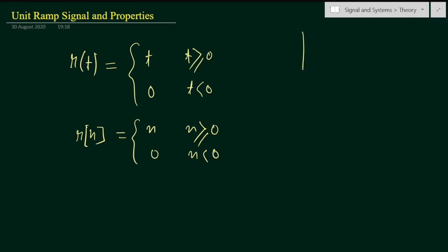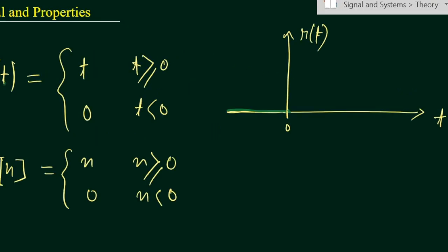Now let us see the graph. For the unit ramp signal we consider a continuous time graph. For t less than zero we have zero value. For t equal to zero, r(t) will be zero. For t equal to one, r(t) will also be one. If it is 0.5 then r(t) will be 0.5. In this way it keeps increasing, and if we connect these points we get a continuous time signal — a straight line.